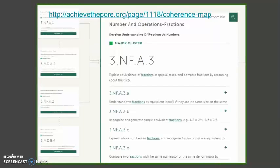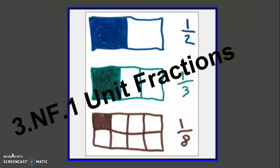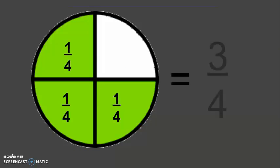As the Achieve the Core coherence map shows, 3NF1 and 3NF2 are standards that prepare students for success in 3NF3. 3NF1 focuses on unit fractions, or fractions that have a numerator of 1. Students then use these unit fractions to build fractions that have a numerator greater than 1. For example, 3 fourths is composed of 3 one-fourths.